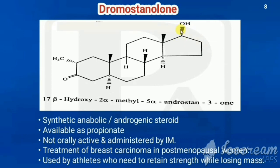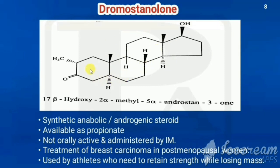For the chemical name: a thick line indicates beta configuration and a dotted line indicates alpha. At position 17 there is a beta-hydroxy group, giving 17-beta-hydroxy. At position 2 there is a methyl group shown by a dotted line, giving 2-alpha-methyl. At position 5 there is a hydrogen by dotted line, giving 5-alpha. The ring system is androstane, with a ketone at position 3, so the full name is 2-alpha-methyl-5-alpha-androstane-3-one-17-beta-ol.